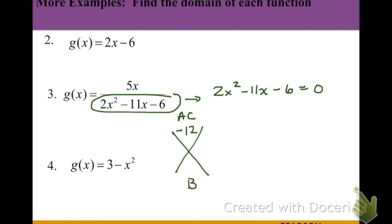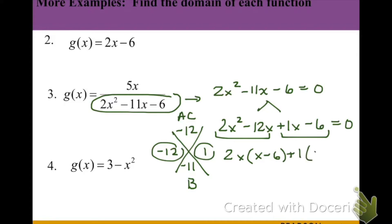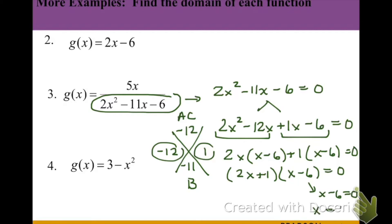Our a times c will be negative 12 and b will be negative 11, so we need two numbers that multiply to negative 12 and add to negative 11. Those two numbers are negative 12 and positive 1. We branch out the negative 11x and replace it with those two values, then use grouping. From the first two terms, we factor out 2x leaving x minus 6; from the second two, we take out positive 1 also leaving x minus 6. Our two factors are 2x plus 1 and x minus 6, giving excluded values of positive 6 and negative one-half.